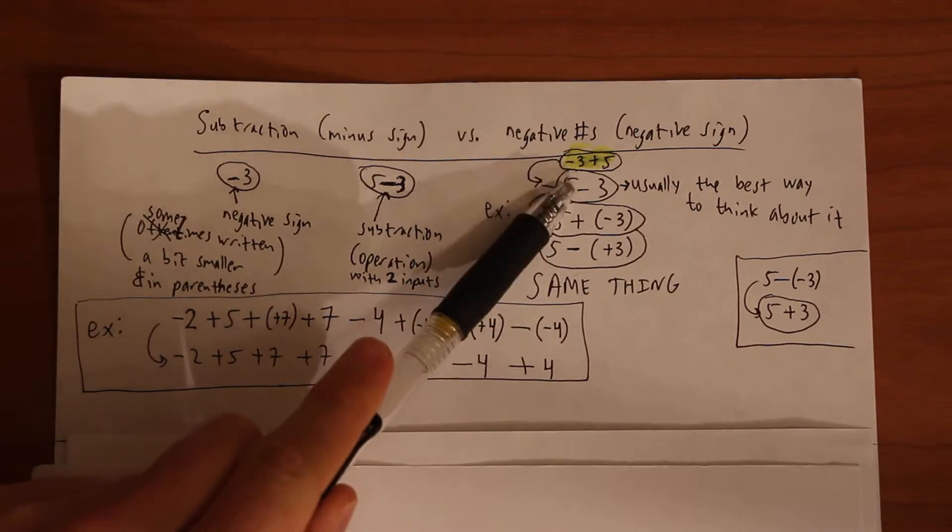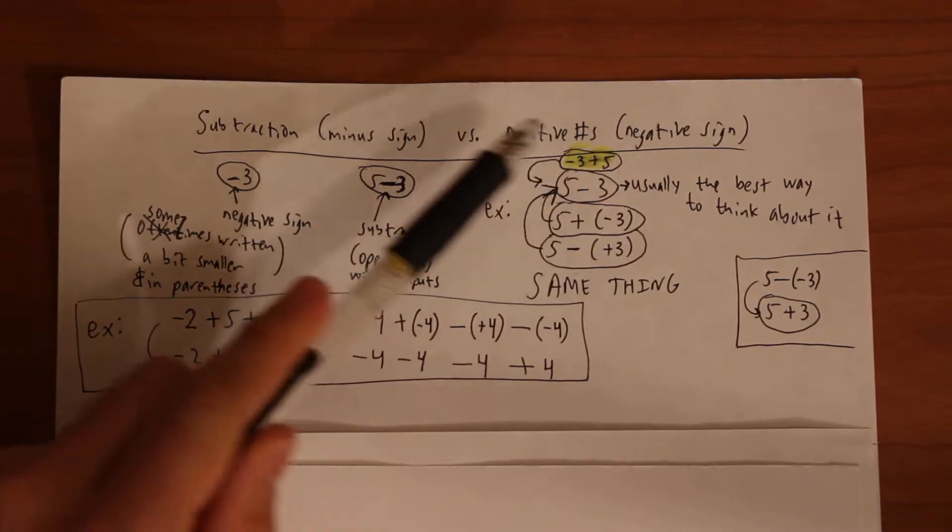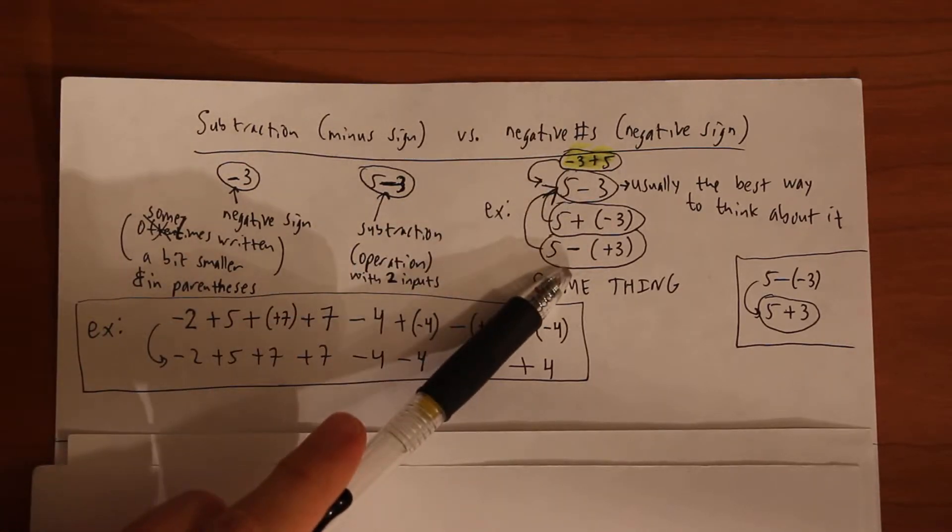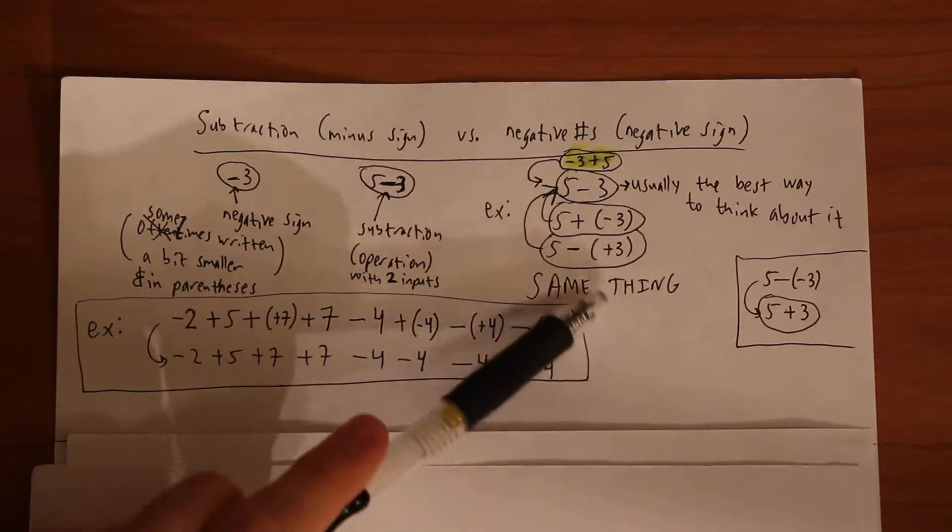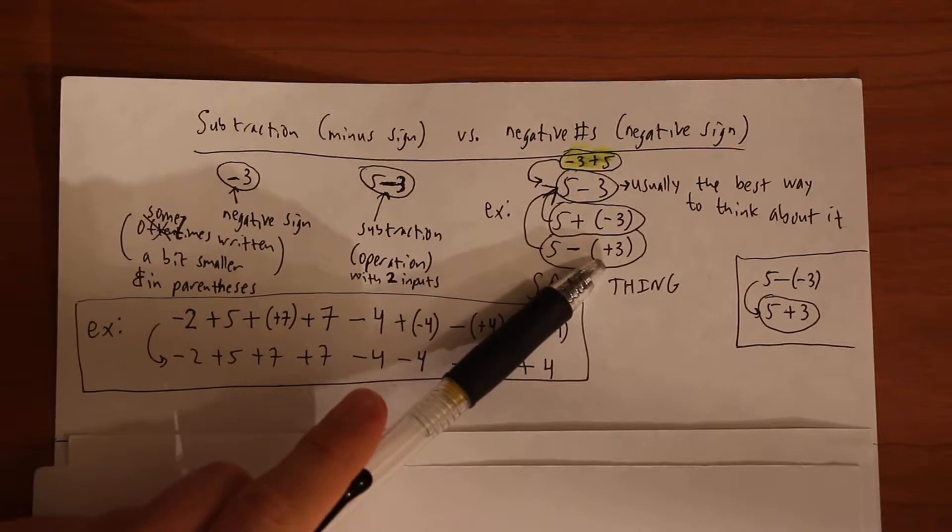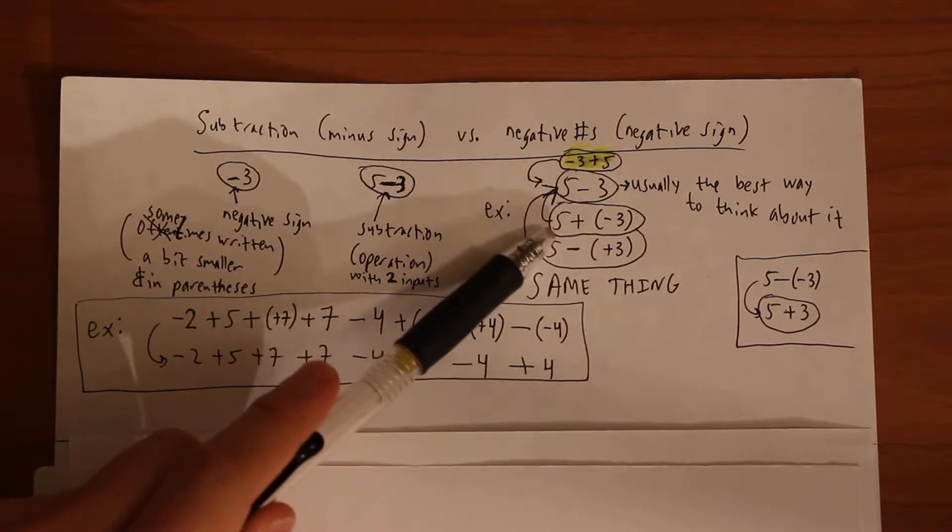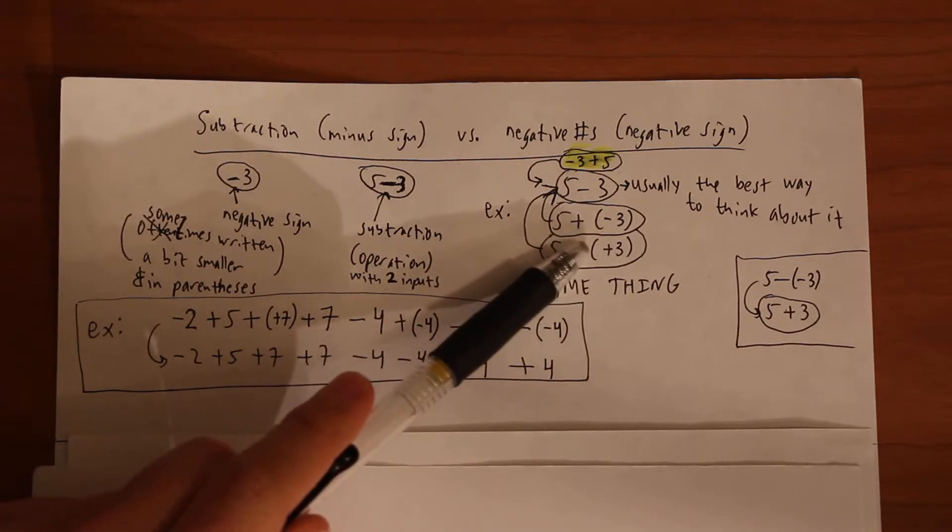So this is a subtraction because there's a left side and a right side, two numbers. However, here this is five minus a positive three, so that plus sign indicates a sign. Or here, five plus negative three.